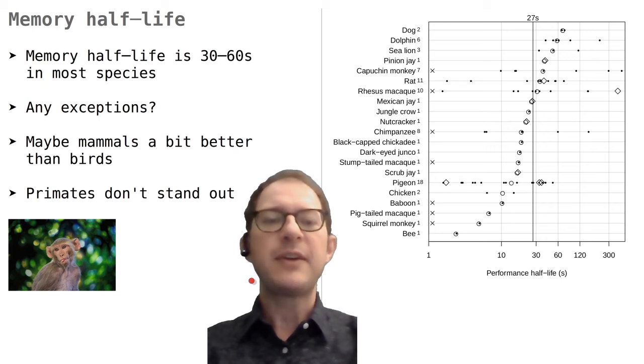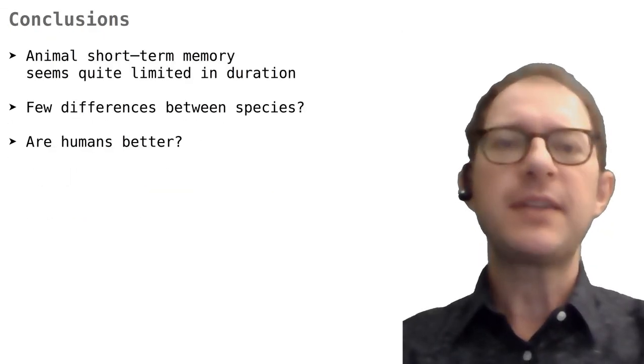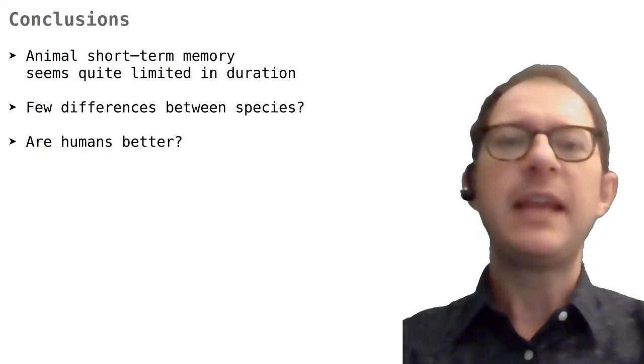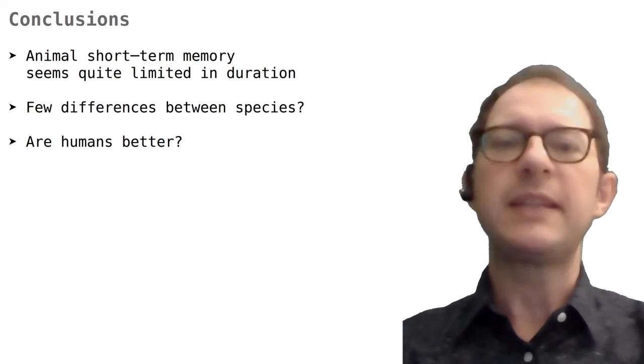It's also true, on the other hand, that the only bird species that has been extensively studied is the pigeon, so it might not be fair to conclude something about birds in general. Pigeons should also get the benefit of the doubt themselves, because as a research species they are often used in experiments designed to challenge their memory, rather than to help them get the best possible performance. A last thing to note is that primates, in general, don't seem to stand out as having much better memory than other animals. The primate species surveyed here are marked with crosses, and you see that the crosses are all over the place, from the top to the bottom of the graph. Our conclusions are that animal short-term memory is quite limited in time, and there might not be big differences between species, at least when it comes to birds and mammals, but these conclusions should wait until more data become available.